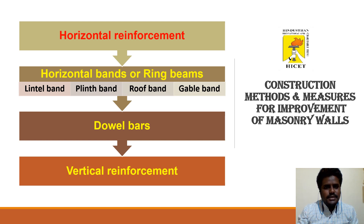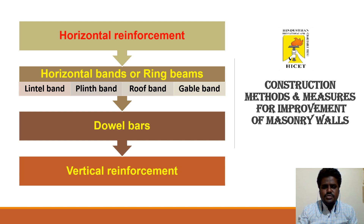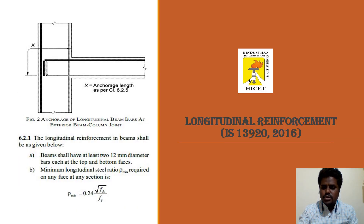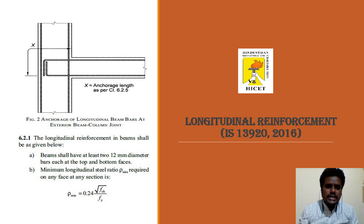For construction measures to improve masonry buildings, horizontal reinforcement is provided in the form of ring beams or horizontal bands — lintel beam, blitz beam, roof band, and gable band — along with corner bars and vertical bars. These reinforcements strengthen load-bearing masonry structures. As per IS 13920 (2016), regarding anchorage zone length clause 6.2.5, longitudinal reinforcement in beams shall be at least 12 mm diameter bars at both the top and bottom.